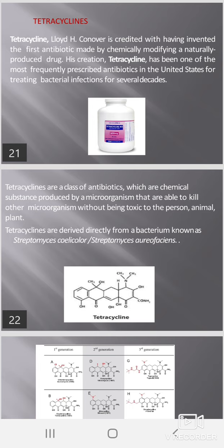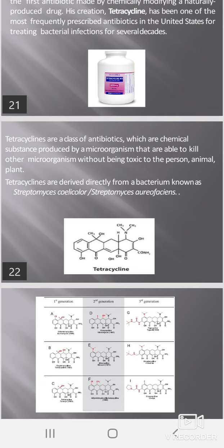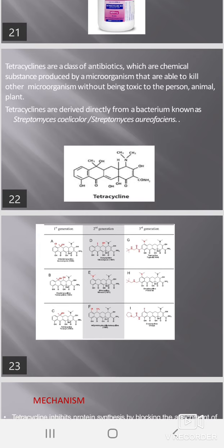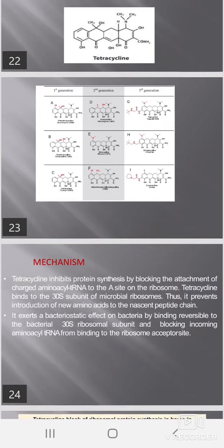Tetracyclines are derived directly from bacteria known as Streptomyces coelicolor and Streptomyces aureofaciens. You can see in the diagram the structure of tetracycline — first generation, second generation, and third generation.